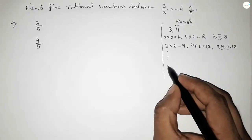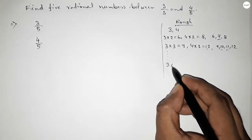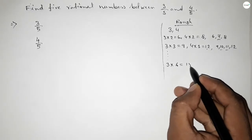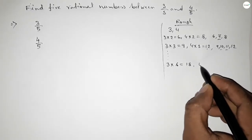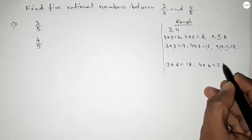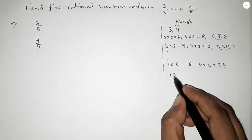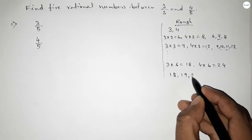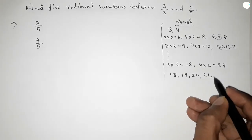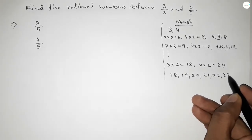If you multiply 3 with 6, this is 18, and if you multiply 4 with 6, then this is 24. Now between 18 to 24 we can get 5 natural numbers.